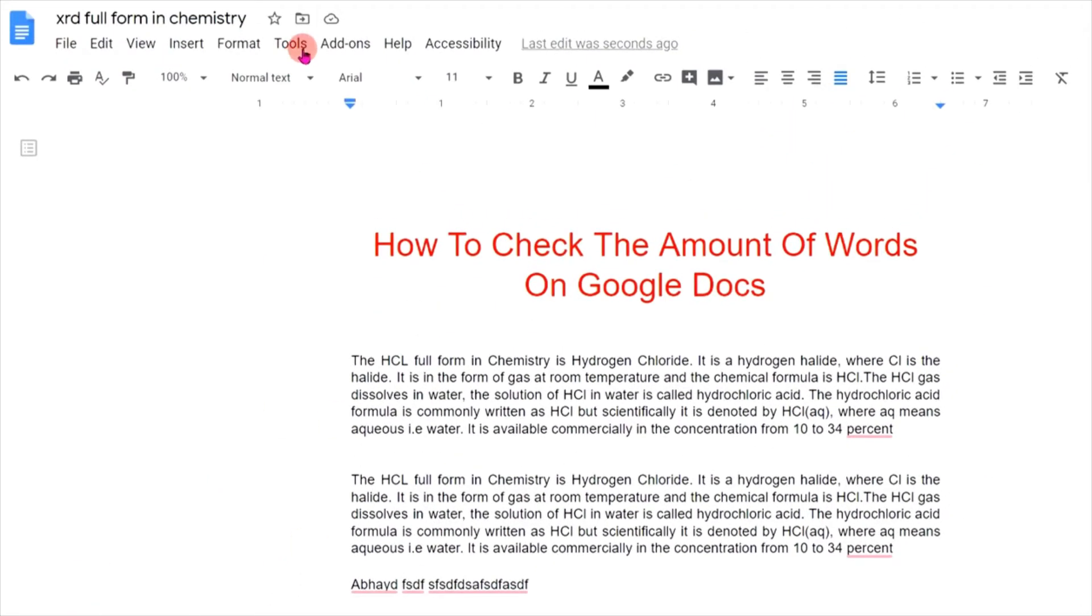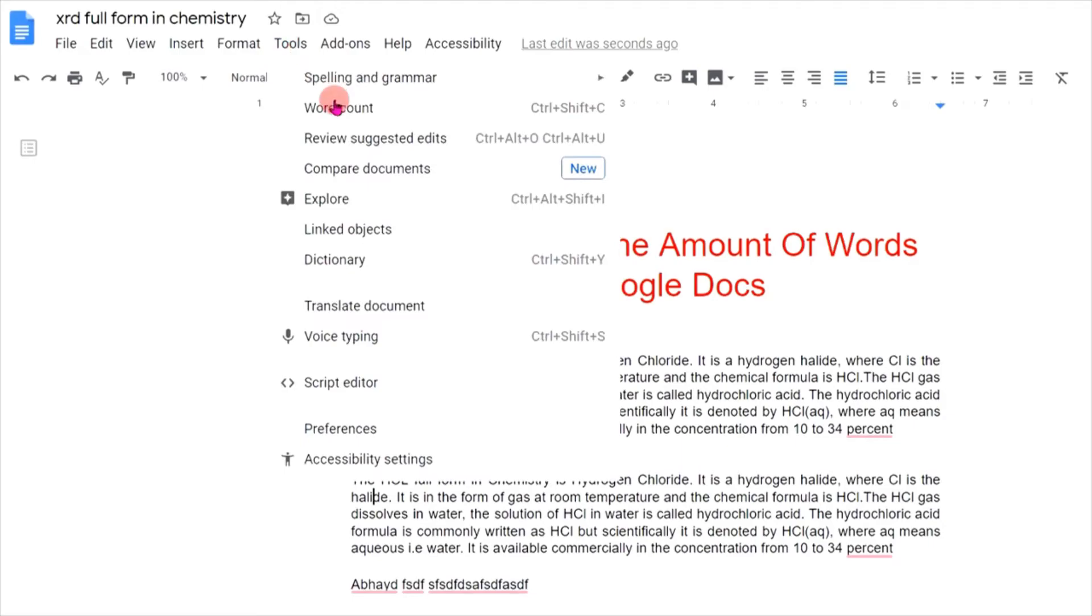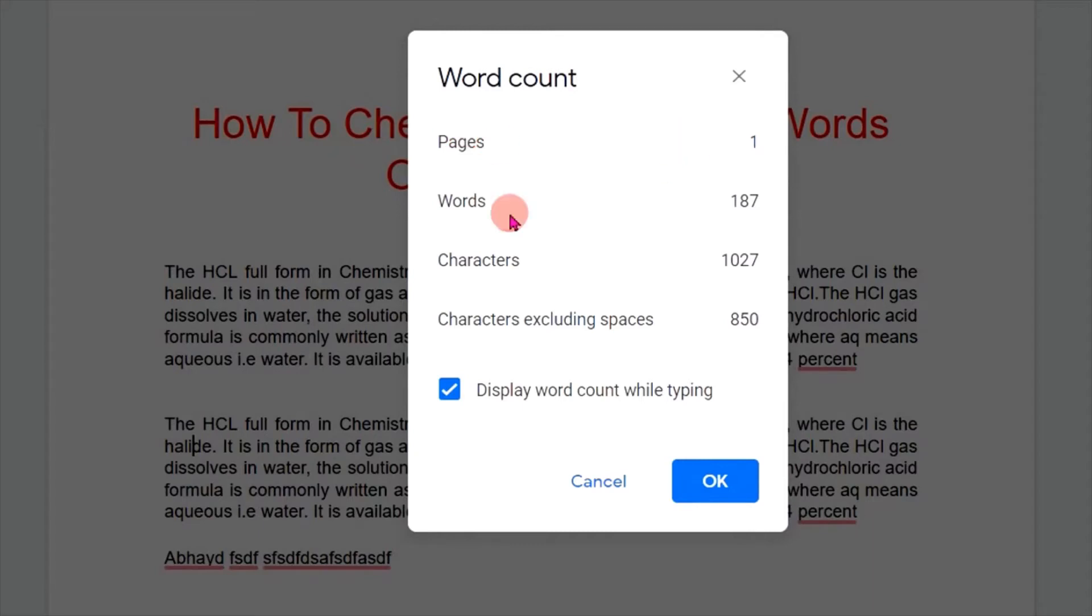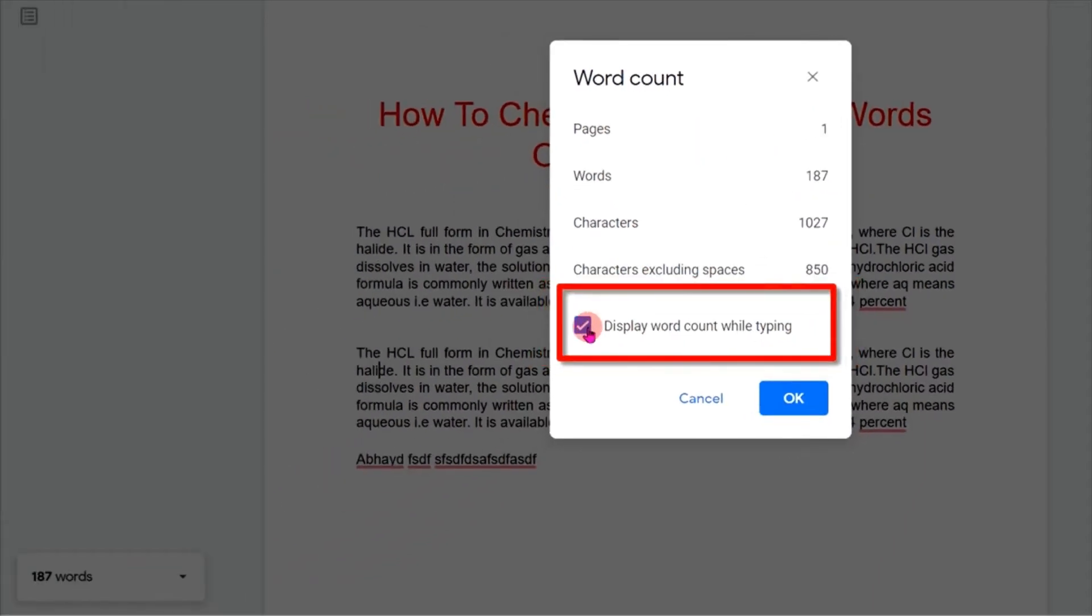Go to Word Count. Here you will see the same data: page, word, characters. What you have to do is click 'Display word count while you type' so that this word count will appear here.